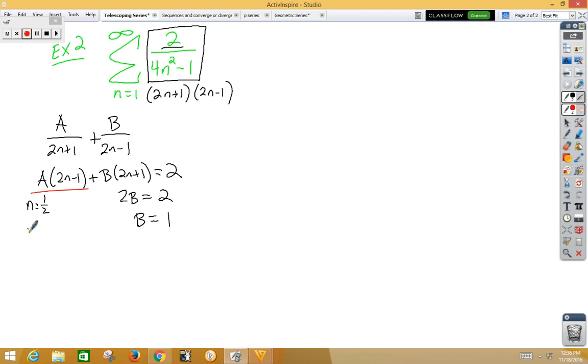If we choose n = -1/2, we get -2A = 2, so A = -1.